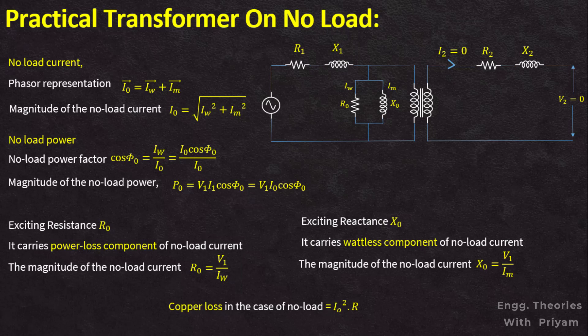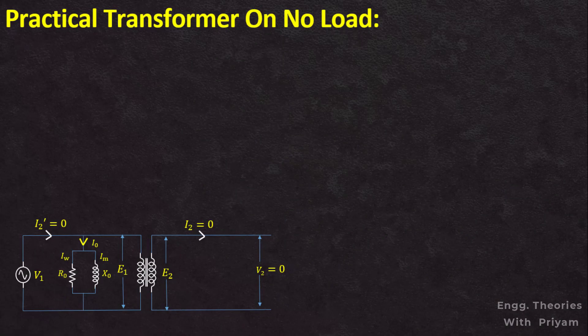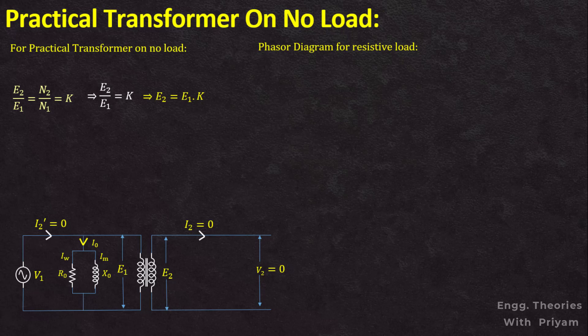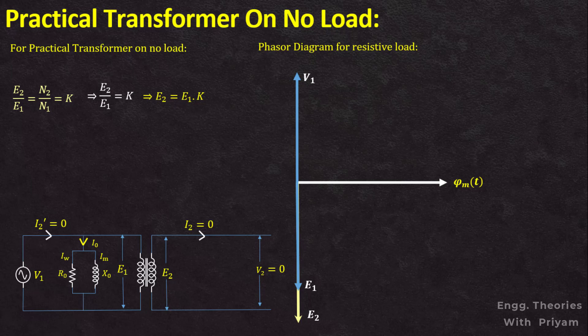Let's take a look at the phasor diagram for the no-load condition of the practical transformer. First, we take the main flux φm as the reference. Both EMFs E1 and E2 are in phase with each other and both lag the main reference flux φm by an angle of 90 degrees. Both EMFs E1 and E2 are 180 degrees out of phase with the supplying alternating voltage V1. E1 is known as the self-induced EMF, equal to −V1, and E2 is called the mutually induced EMF, equal to −K·V1.